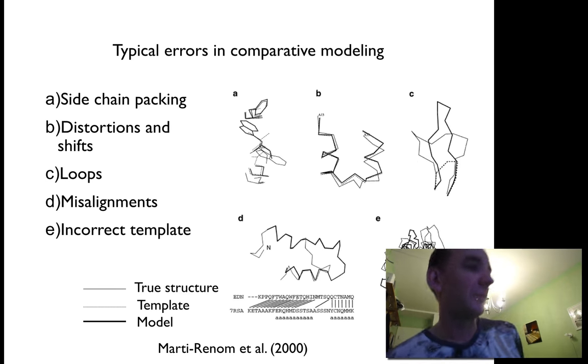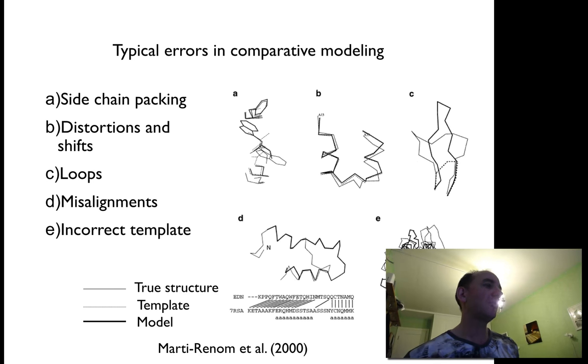There are some typical errors that you find when you do homology modeling. You can see some of them in this picture here. For instance, there are often some sidechains not correctly packed, as you see in A.